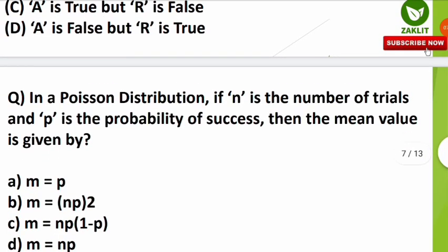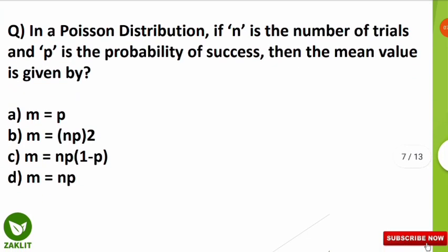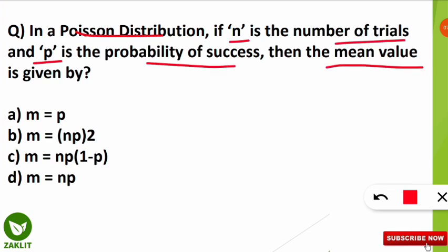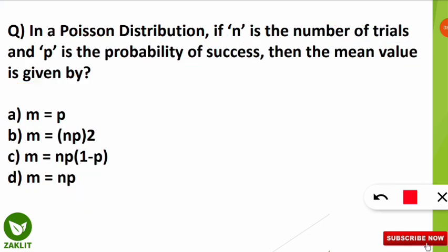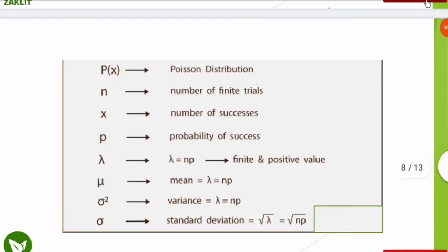The next question comes from Poisson distribution, also a frequently asked topic. The question is: 'In a Poisson distribution, if n is the number of trials and p is the probability of success, what is the mean value given by?' The correct option is D: mean (m) = np, because the number of trials multiplied by the probability of success gives us the mean of the Poisson distribution.